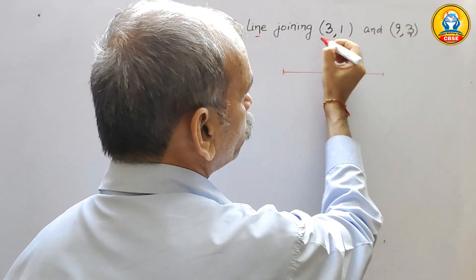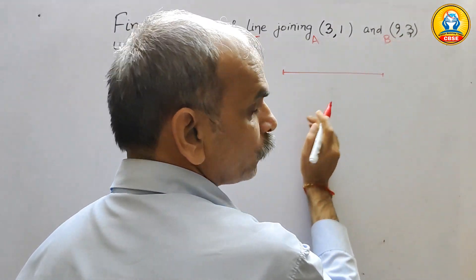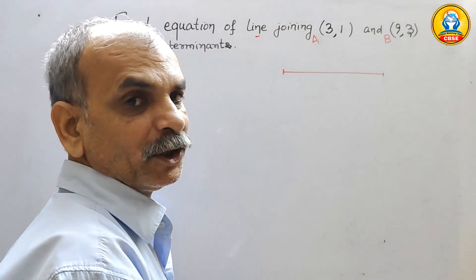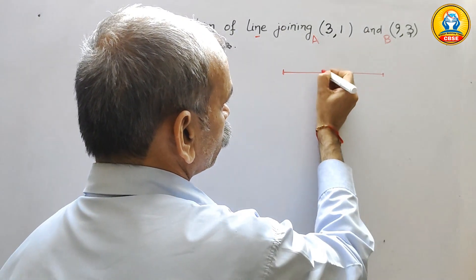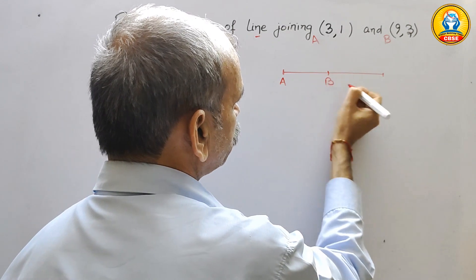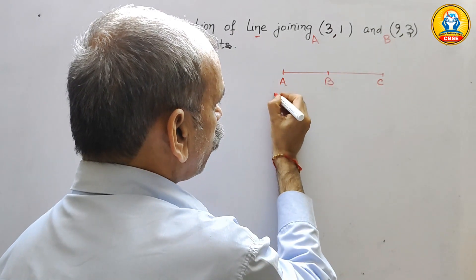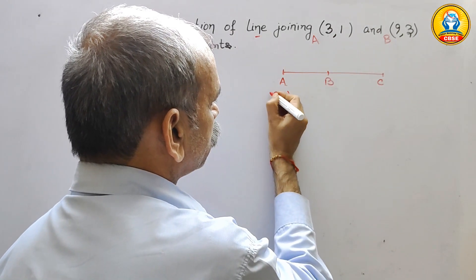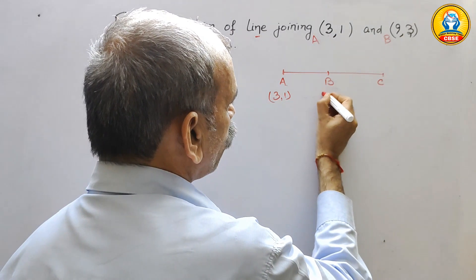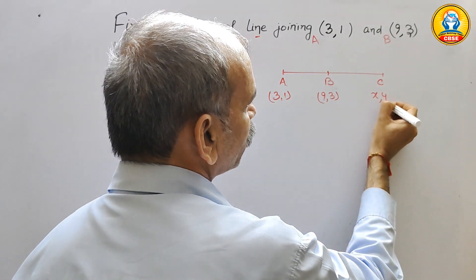So here they have given 2 points, first point is your A, second point is your B. But we will make 3 points. So this will be your A, this will be your B, this will be your C. A is (3,1), B is (9,3) and C will be (x,y).